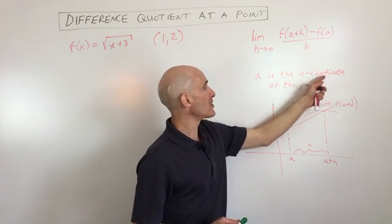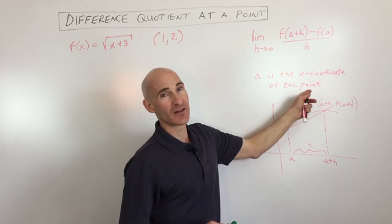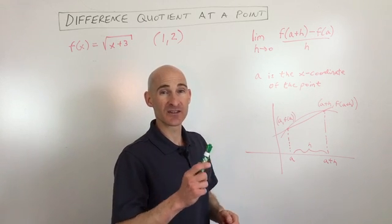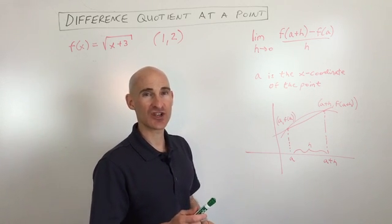Now a is the x-coordinate of the point that you're interested in finding the slope at, the instantaneous rate of change.